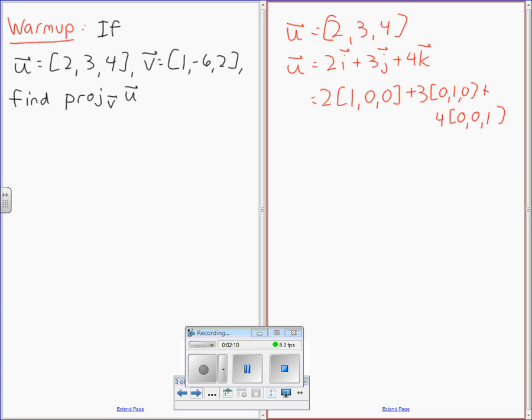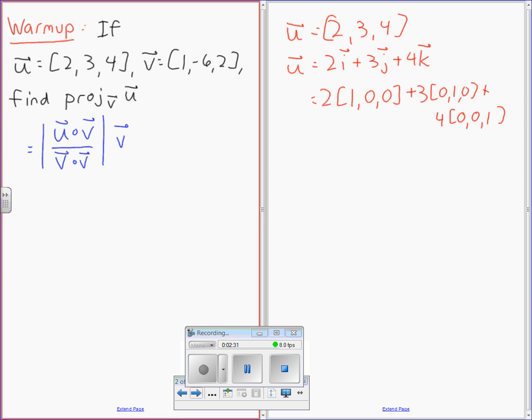Let's deal with the projection of u onto v. What's the equation for the projection of u onto v? Can someone please tell me how I do u dot v? 2 times 1 plus 3 times negative 6 plus 4 times 2.